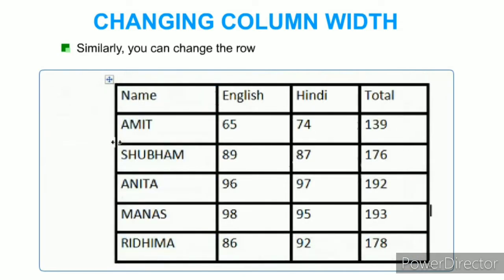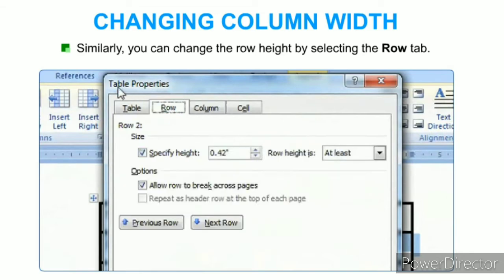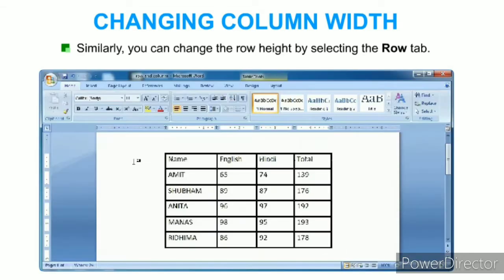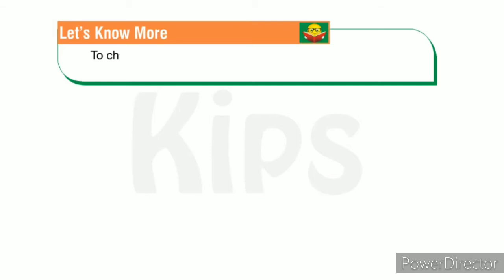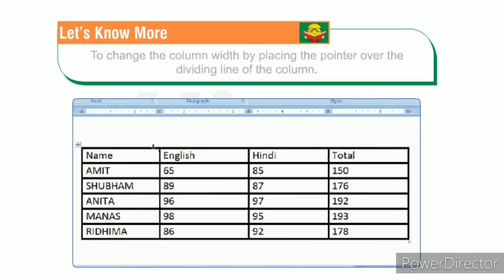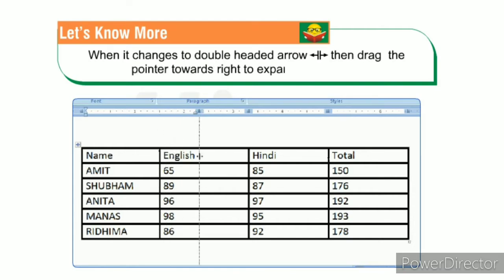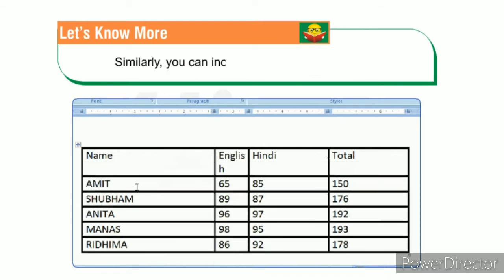Similarly, you can change the row height by selecting the Row tab in Table Properties. You can also change the column width by placing the pointer over the dividing line of the column; when it changes to a double-headed arrow, drag it right to expand the column. You can increase the row height the same way.